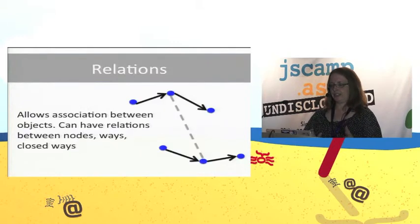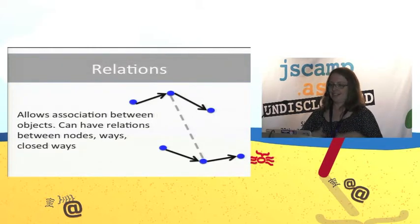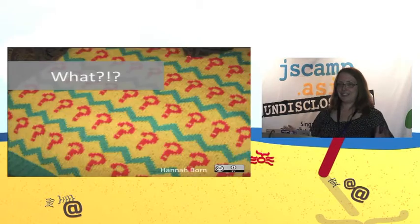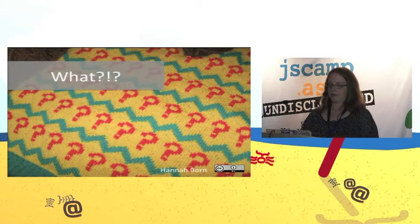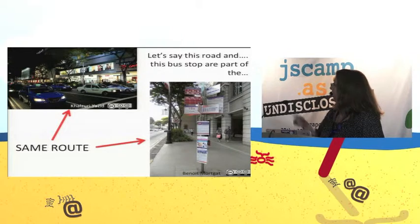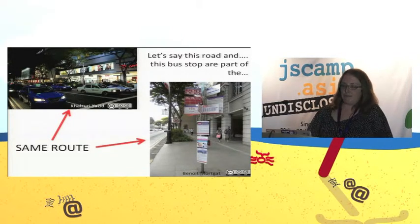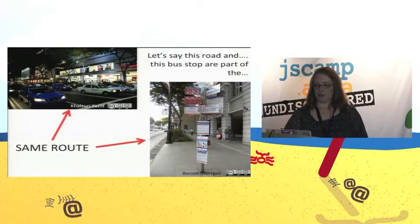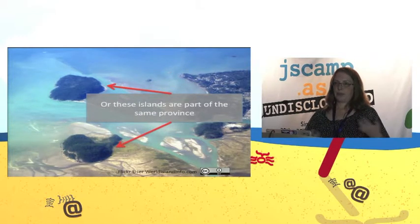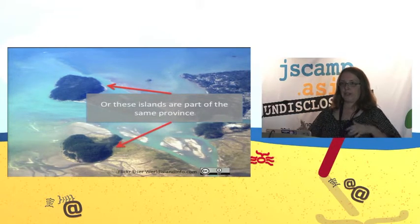We also have a slightly odder idea called a relation — that is, saying something about another object or series of objects. For example, let's say you mapped a road and a bus stop that are part of the same route. You would use a relation to describe that — it's basically a collection. Another example: if you have two islands in the same state or province, you can combine them to say something broader.